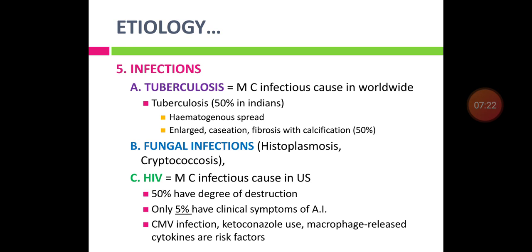HIV infection is the most common infectious cause in the United States. Almost 50% will have destruction once HIV-associated primary adrenal insufficiency is diagnosed, but only 5% will have clinical symptoms. CMV infection, ketoconazole use, megestrol acetate, and cytokines are additional risk factors that increase adrenalitis in patients with Addison's disease.